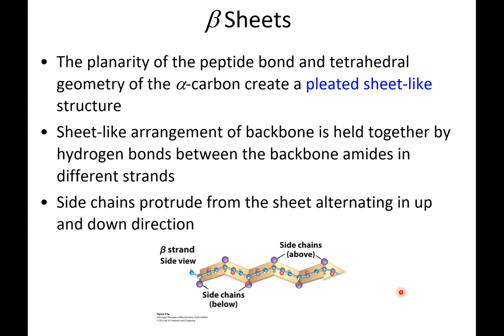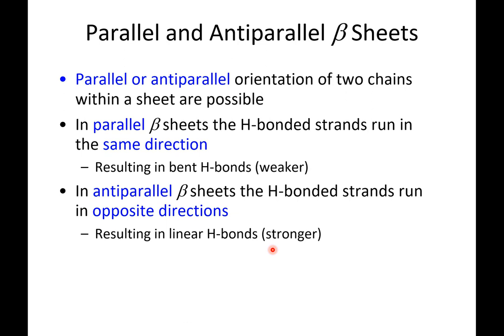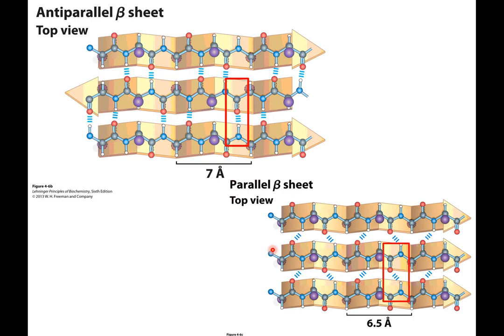Now let's look at the structure of the beta sheet. The beta sheet is not as tightly woven as an alpha helix. We still see the backbone structure forming the interior, with side chains poking out — but with the beta sheet, they poke out in opposite directions. So one R group is down, the next R group is up, alternating.